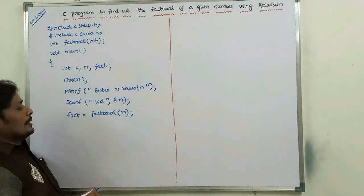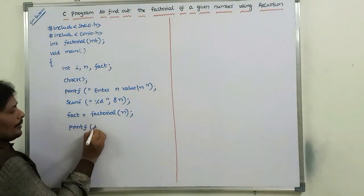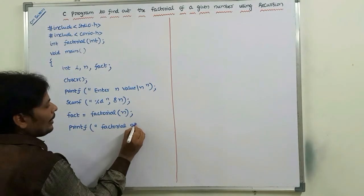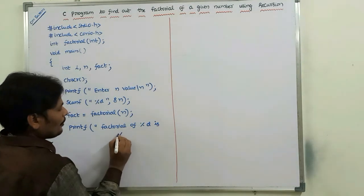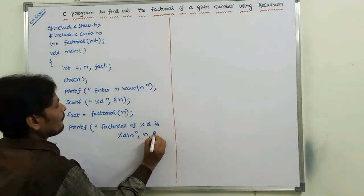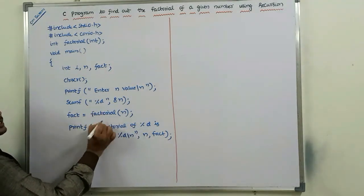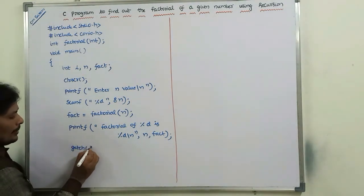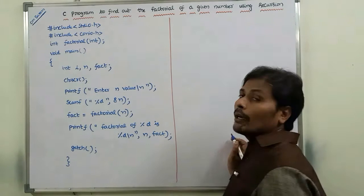Next, printf("factorial of %d is %d\n", n, fact). I will explain this step after writing the program. Next, getch. Then the main program is closed. Then we have to write the called function.